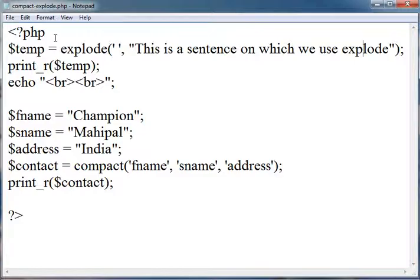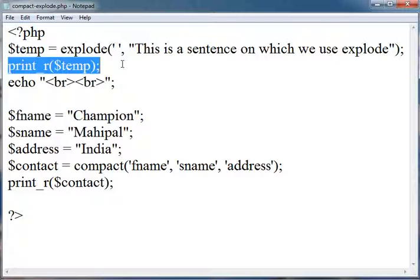We can also use any other character here, but we are using space so that we can easily do this. And after this, I have used the function print_r, print underscore r.